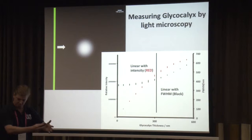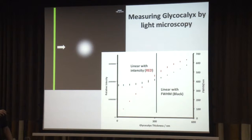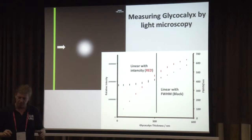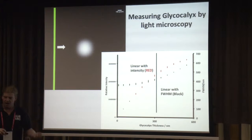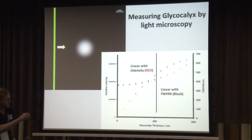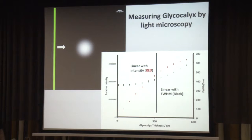We can look at the full width half maximum — how wide the glycocalyx is when we measure the width in our light micrograph. For very small values it's absolutely rubbish, and then once we get to very large values, the full width half maximum works. But this is for a perfect system. In blood vessels that are 3D, curved, with noise, this line moves further in that direction. The glycocalyx thickness of around this region is what we're interested in, so we can't simply use the full width half maximum as a measure of glycocalyx height, and we can't use intensity as a measure — it falls right in between.